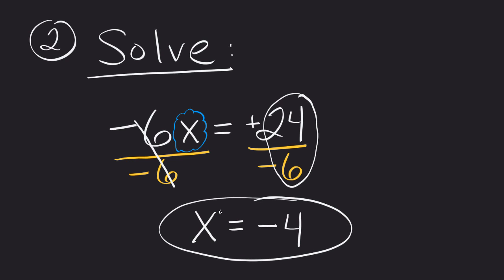Be really careful with the signs because that's where a lot of people make their basic mistakes on these types of things. So division property of equality just says, as long as it's not 0, I can divide both sides of an equation and I'll get a true statement back.